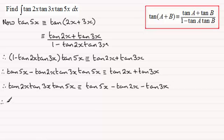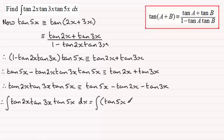So moving on then, I can therefore say that the integral of tan of 2x, tan 3x, tan 5x, well that's clearly going to be the same as integrating all of these three terms. I better put them in a bracket there, tan 5x minus tan 2x minus tan 3x. And that's all integrated with respect to x.